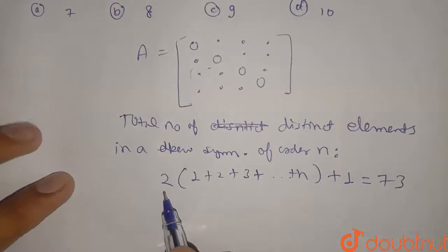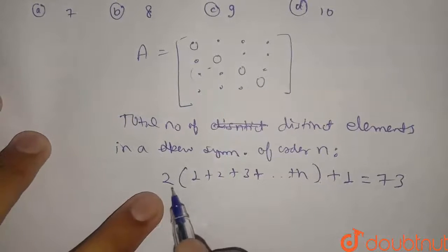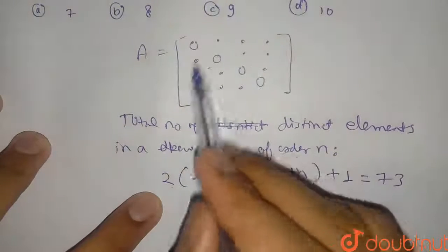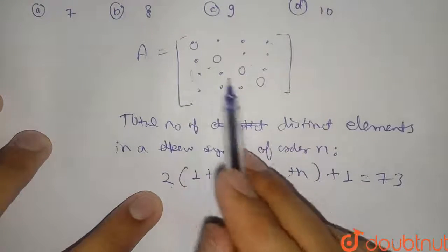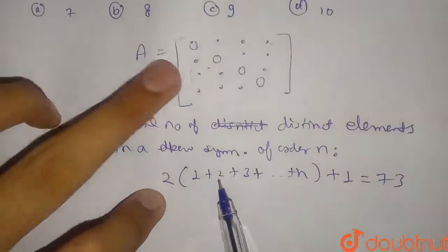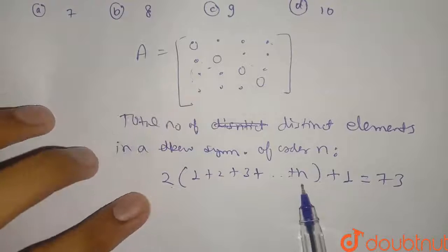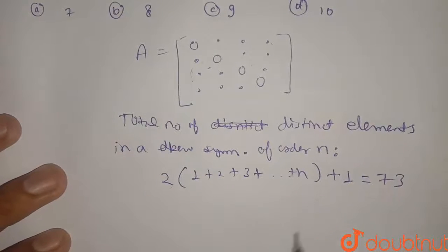Why we have taken twice? Because we have these two triangles. For first triangle, I can write one, this element, this 2 then 3 then till n because we have given that order n.